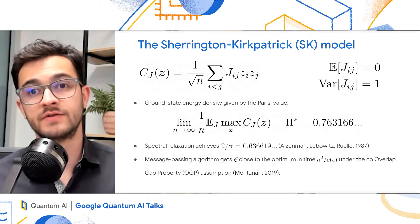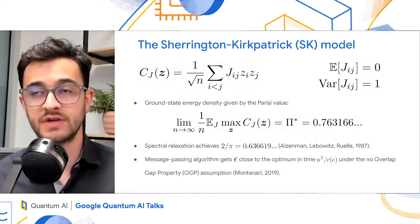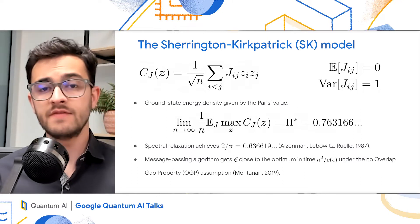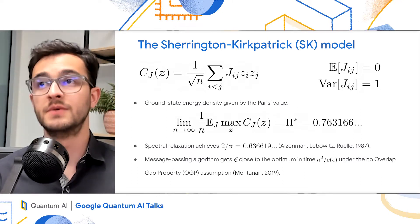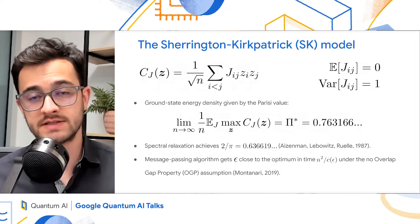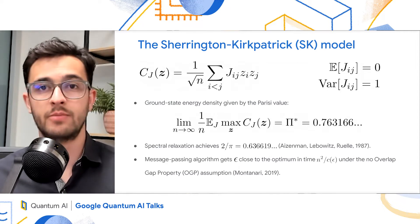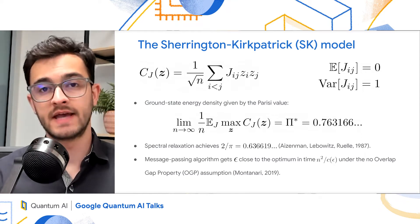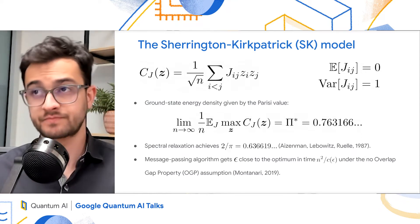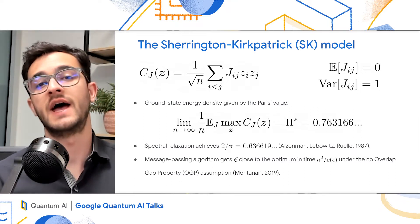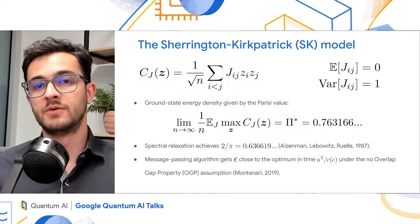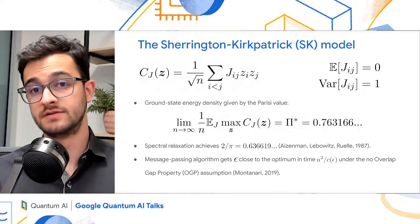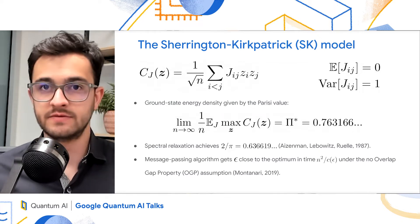So it is known that for this problem, the ground state energy density is given by the Parisi value, which is about 0.76. A few classical algorithms for this problem include spectral relaxation, which gets to 2 over pi, about 0.63. And there's also a message passing algorithm that gets epsilon close to the optimal, but it assumes that the problem does not have the overlap gap property, which is a topological property of the solution space. It is believed that this assumption is true, but it hasn't been proven yet.